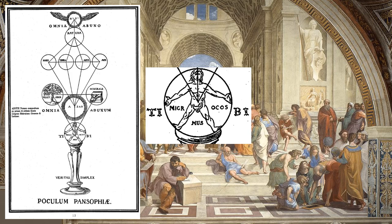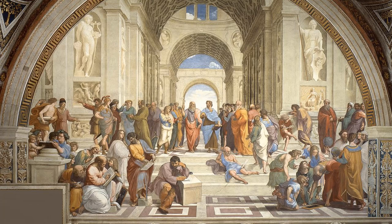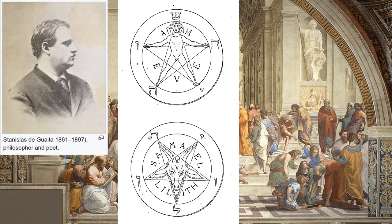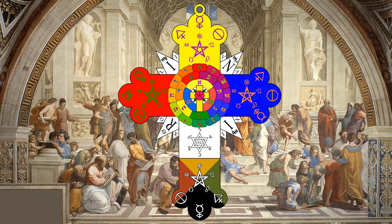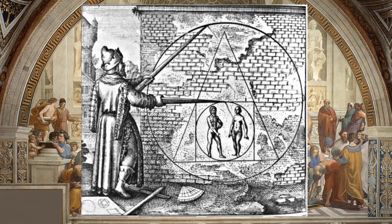In the 18th century, an image of a Vitruvian-style man with the words 'microcosmos' was published in the alchemical text Secret Symbols of the Rosicrucians. Then, a hundred years later in 1897, a French poet and Rosicrucian published an image of Adam Kadmon.